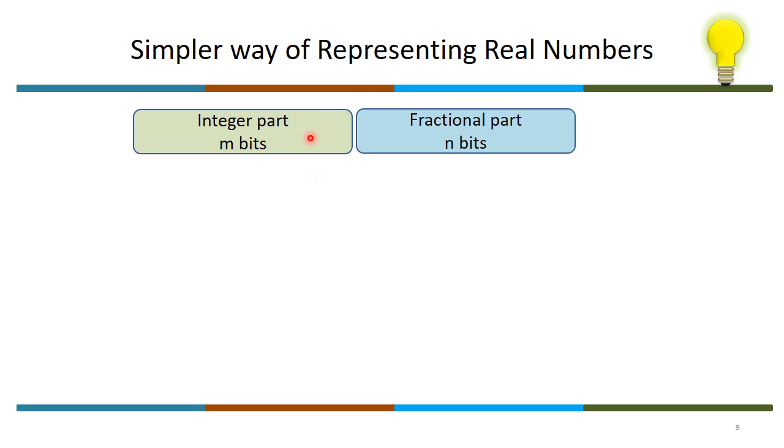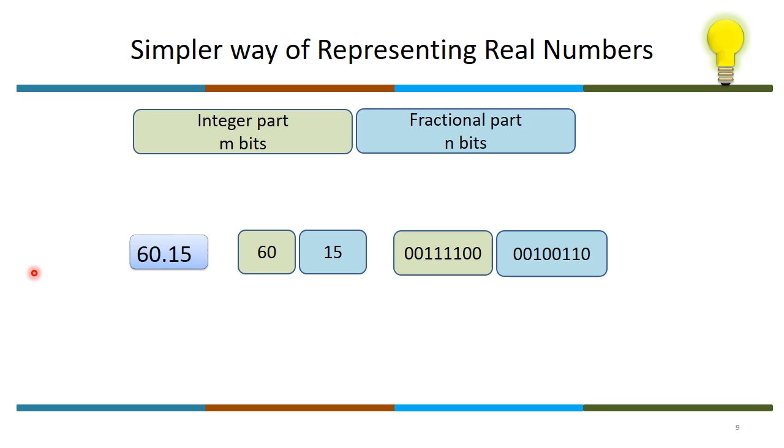We design circuitry to operate independently on integer and fractional parts and then accumulate. Here is an example: 6.15. We take it as separately 60 and 15, and the corresponding binary representation would be this. 1.15 is an approximation to 0.15, but not exactly 0.15.